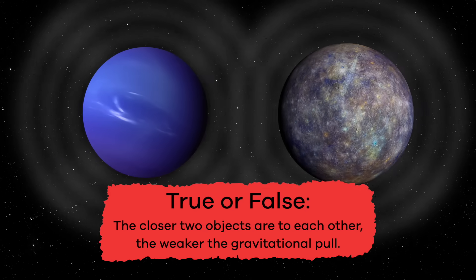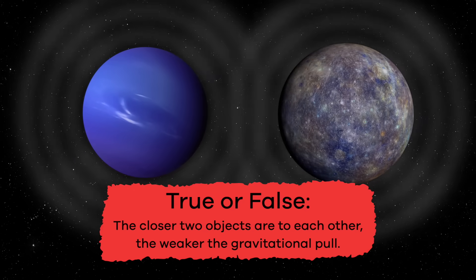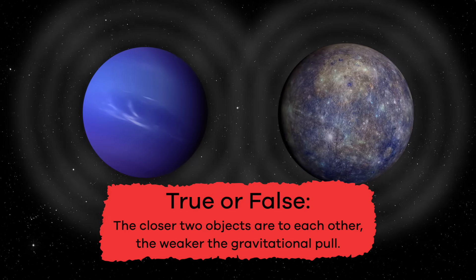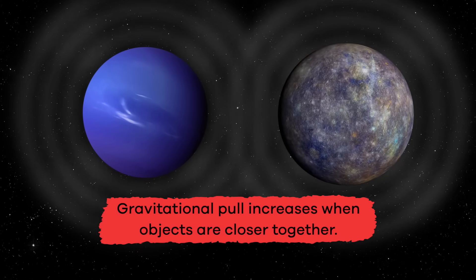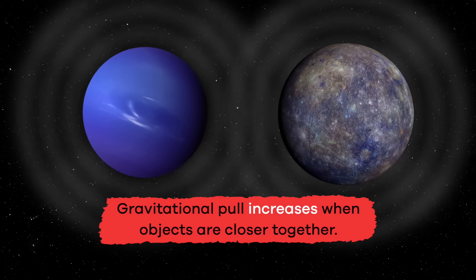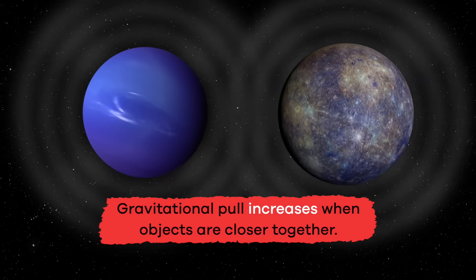True or false? The closer two objects are to each other, the weaker the gravitational pull. False. Gravitational pull increases when objects are closer together.